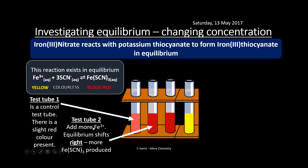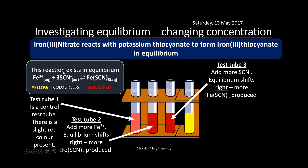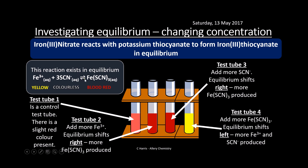Adding more Fe³⁺ ions shifts equilibrium right to use them up, producing more iron(III) thiocyanate — the solution turns blood red. Similarly, adding more thiocyanate ions also shifts equilibrium right — blood red again. However, adding more iron(III) thiocyanate shifts equilibrium left; more Fe³⁺ and SCN⁻ are produced, so the solution turns yellow. This colorfully demonstrates Le Chatelier's principle.